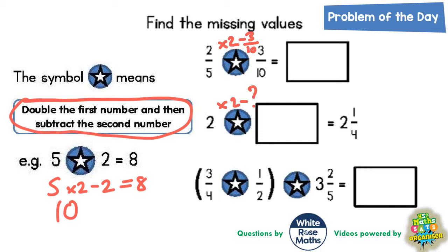And on the third one it's going to be times 2 take away a half and times 2 take away 3 and 2 fifths.